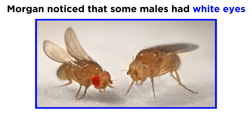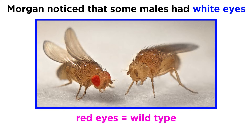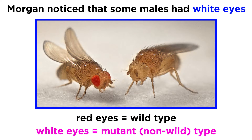In studying the flies, he noticed a rare characteristic that sometimes appeared in males, and that was white eyes instead of the typical red. If considering phenotypes, red eyes would be referred to as the wild type, and white eyes would be considered the mutant, or non-wild type.